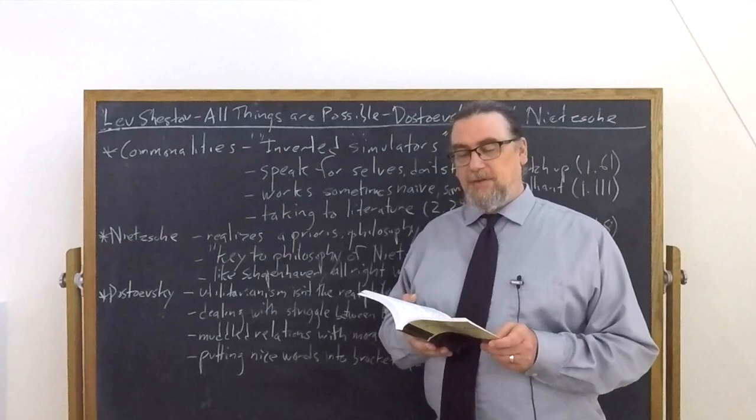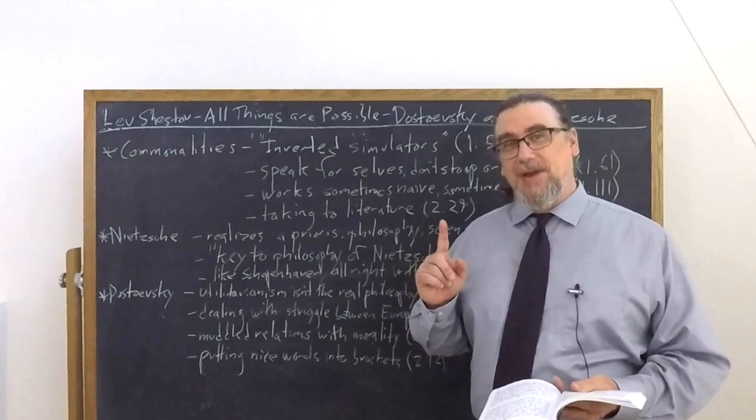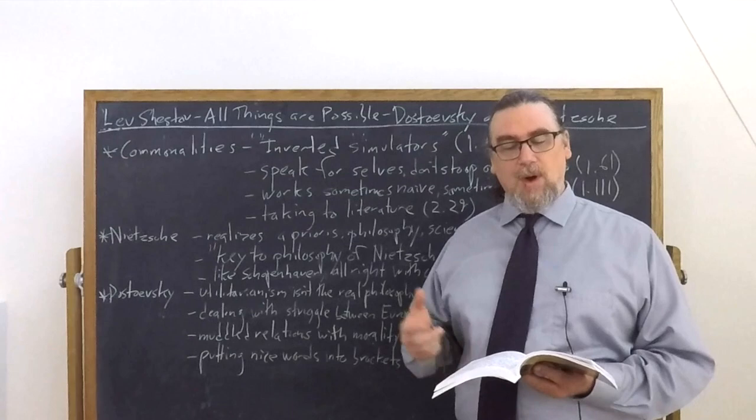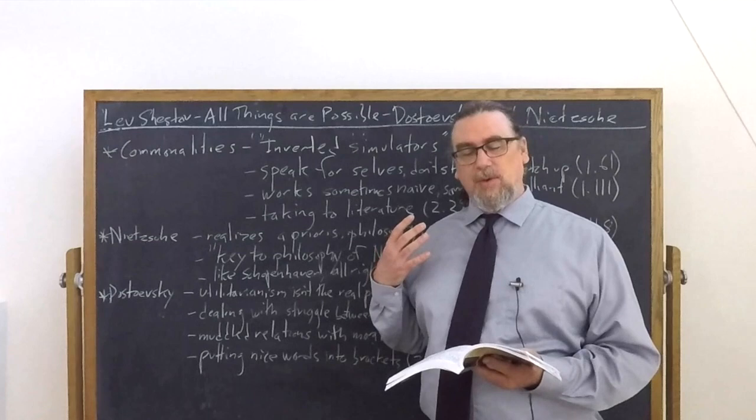And here's where he says something really interesting about these two thinkers. This is why Dostoevsky and Nietzsche were not afraid to speak in their own name. Why? Because, he says, only the person who has nothing to sacrifice, nothing to lose, having lost everything, can hope to approach the people as an equal.